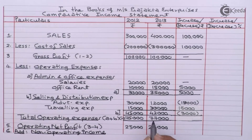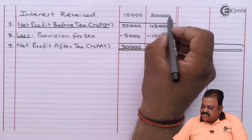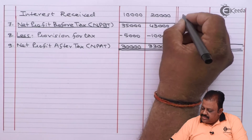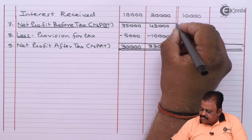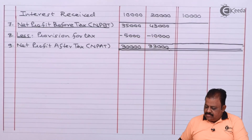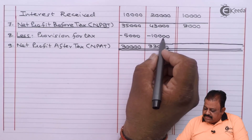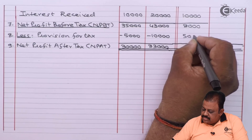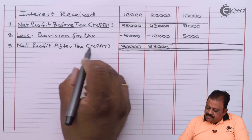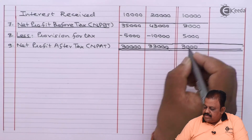Total operating expenses: 77,000 minus 75,000 — increase of 2,000. Operating net profit: 23,000 minus 25,000 — decrease of 2,000. Interest received: 20,000 minus 10,000 — increase of 10,000. Net profit before tax: 43,000 minus 35,000 — increase of 8,000. Provision for tax: 10,000 minus 5,000 — increase of 5,000. Net profit after tax: 33,000 minus 30,000 — increase of 3,000.